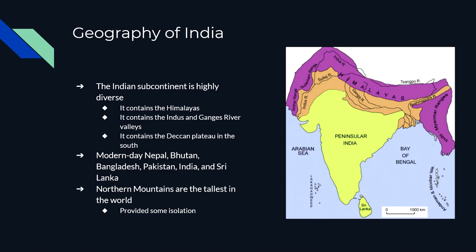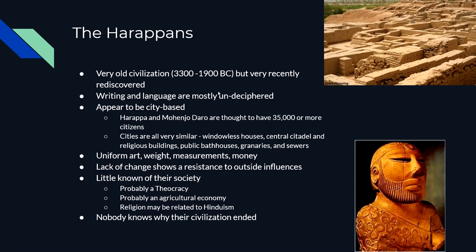You do get some traders, some pilgrims, some armies, but it's not like you're just walking in there easily. The earliest civilization that we know of in ancient India is known as the Harappan civilization. What's really cool is we didn't even know that these people existed when the 1900s began — they were discovered in the early 1920s. Somewhere between 3300 and 3000 BC is when they formed, and somewhere around 1900 to 2000 BC is when they disappeared, something we're still working on.